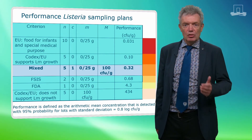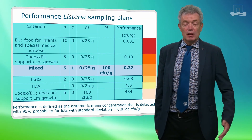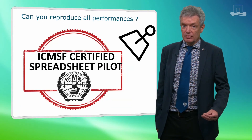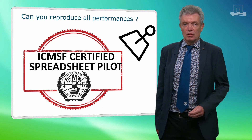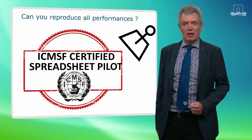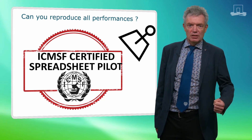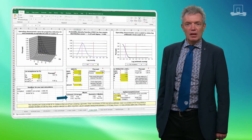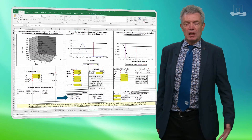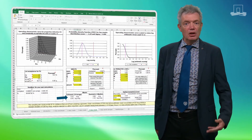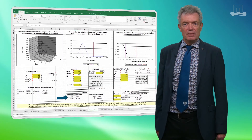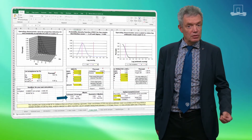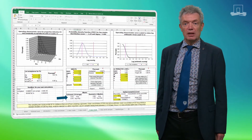Try to reproduce all the numbers of this performance, and when you manage, you are really a certified ICMSF Spreadsheet pilot. Congratulations! Here you see the ICMSF Spreadsheet for a specific three-class mixed plan, indicating also the performance of 0.32 CFU per gram.